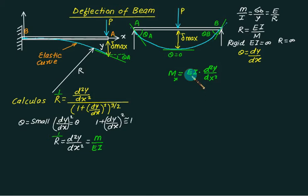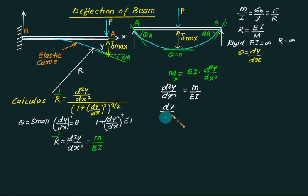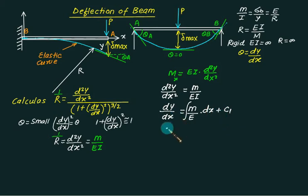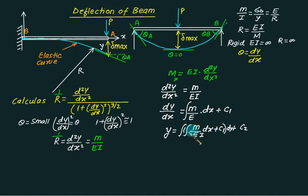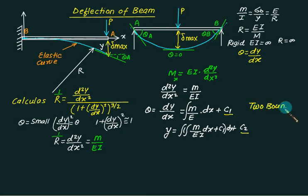You find the bending moment at any section x, divide by EI, and integrate twice to find the deflection. Integrating once gives dy/dx = ∫(M/EI)dx + C1 (the slope). Integrating a second time gives y = ∬(M/EI)dx dx + C1·x + C2 (the deflection). Two constants of integration are required, so a minimum of two boundary conditions must be developed to solve this differential equation.